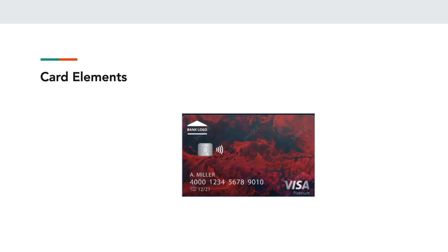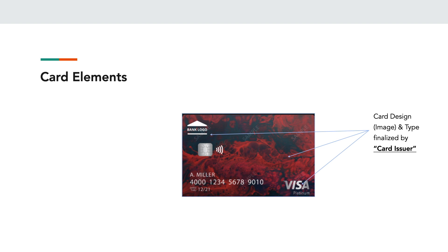Before we look into the certification of cards, let's look at the various elements involved in the card itself. First, the card design — the image that is put on the card, the logo of the bank, where it is placed, and also the type of card and the brand on the card. This is finalized by the issuer. Each issuer has some flexibility to decide the image, where the bank logo is placed, and where the product type is shown. However, the issuers have to adhere to brand guidelines set by the scheme.